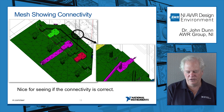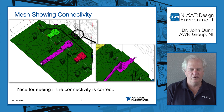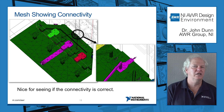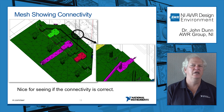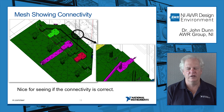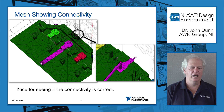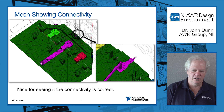This is a feature in our EM socket that we support in our simulators — shown here in Analyst — displaying the 3D connectivity. There's nothing worse than drawing up a 3D geometry, running a long simulation, and finding out you didn't connect it correctly. This shows you the 3D connectivity so I can confirm that I haven't shorted out my signal line.